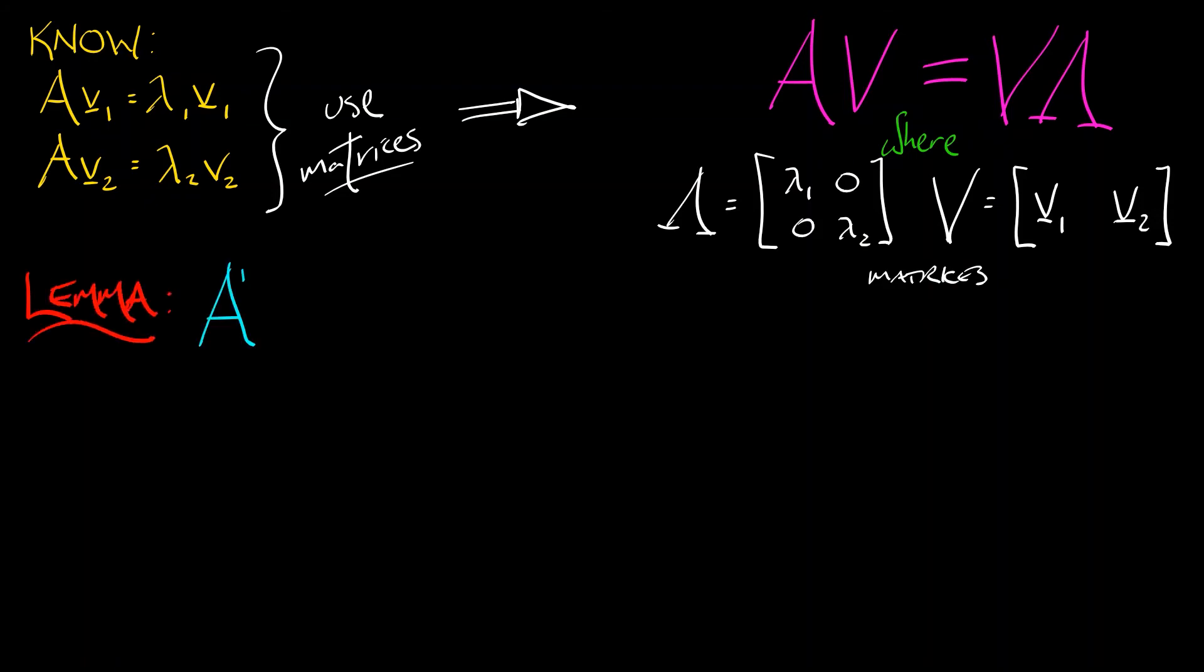Here's a lemma. A to the nth, that is the nth power of A can be written as V lambda to the n V inverse. And lambda to the n is something that we know how to compute. Is this difficult? No, not so bad.